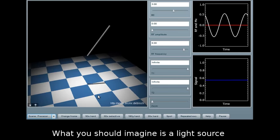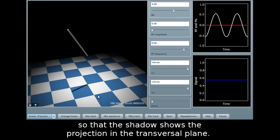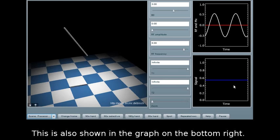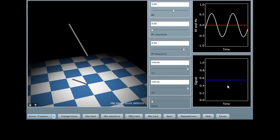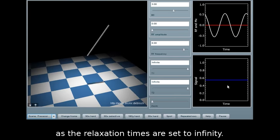What you should imagine is a light source placed exactly above the precessing magnetization so that the shadow shows the projection in the transversal plane. The length of the shadow is therefore the signal strength. This is also shown in the graph on the bottom right. Currently that signal strength is constant as the relaxation times are set to infinity.